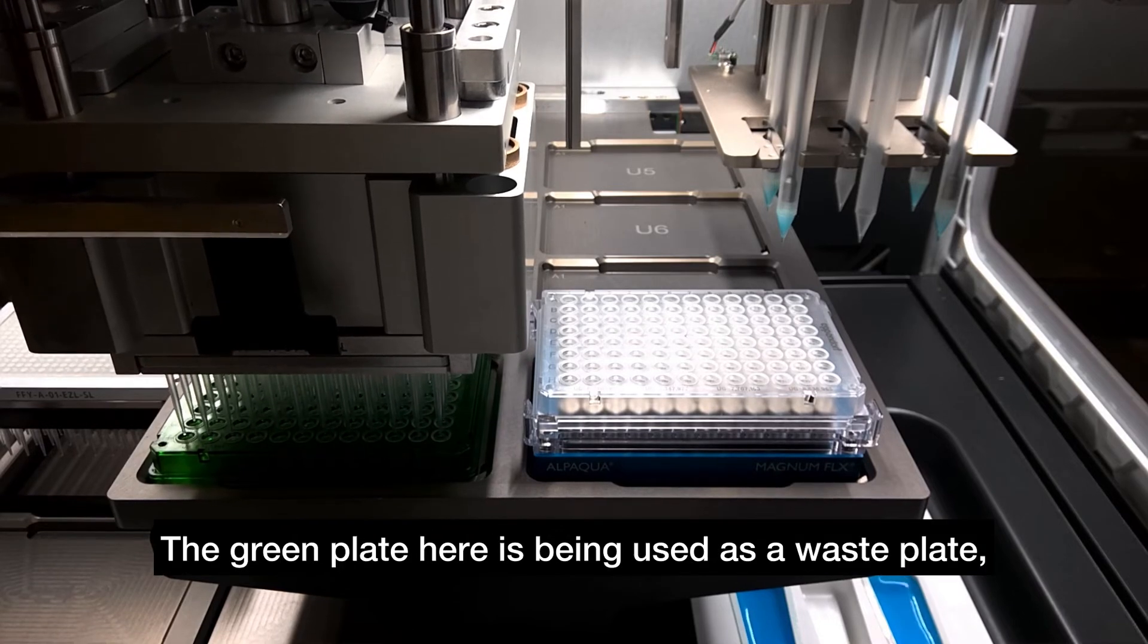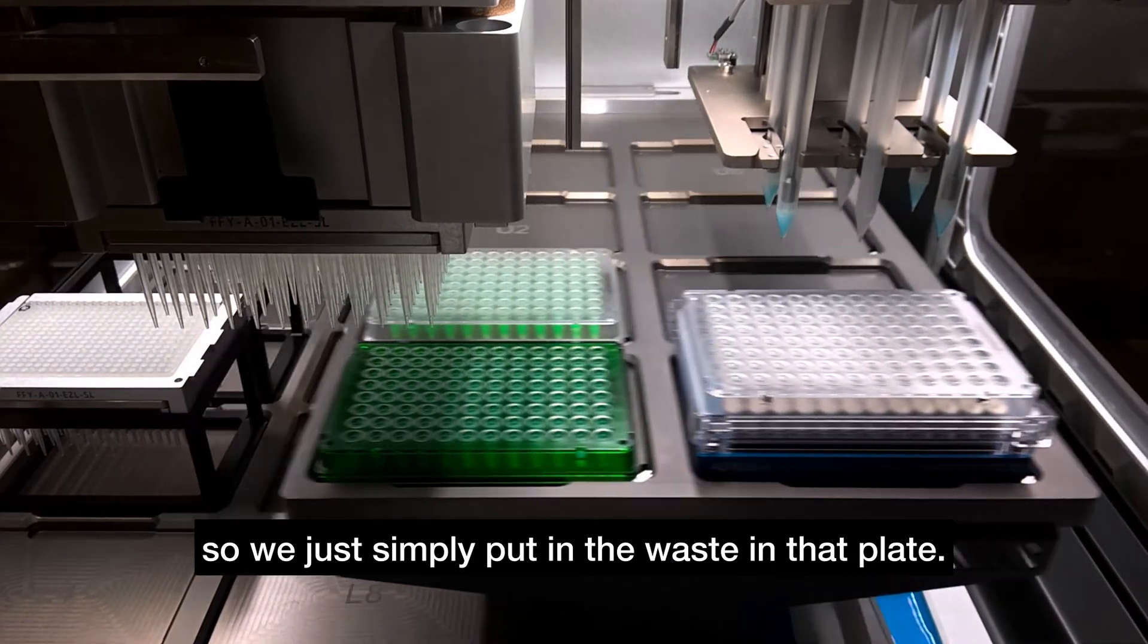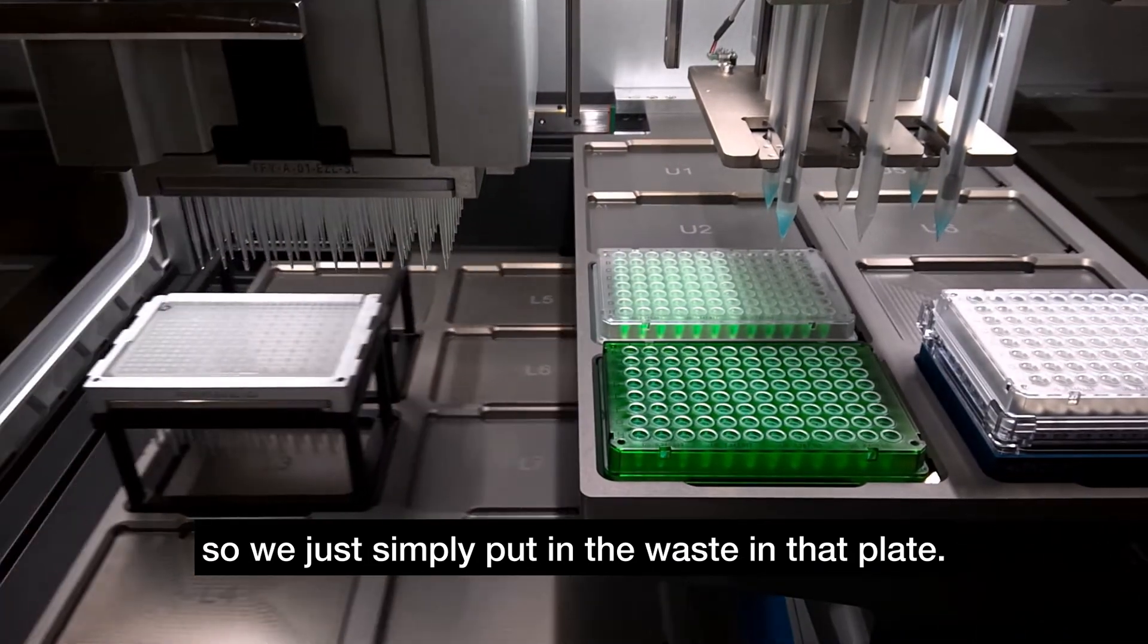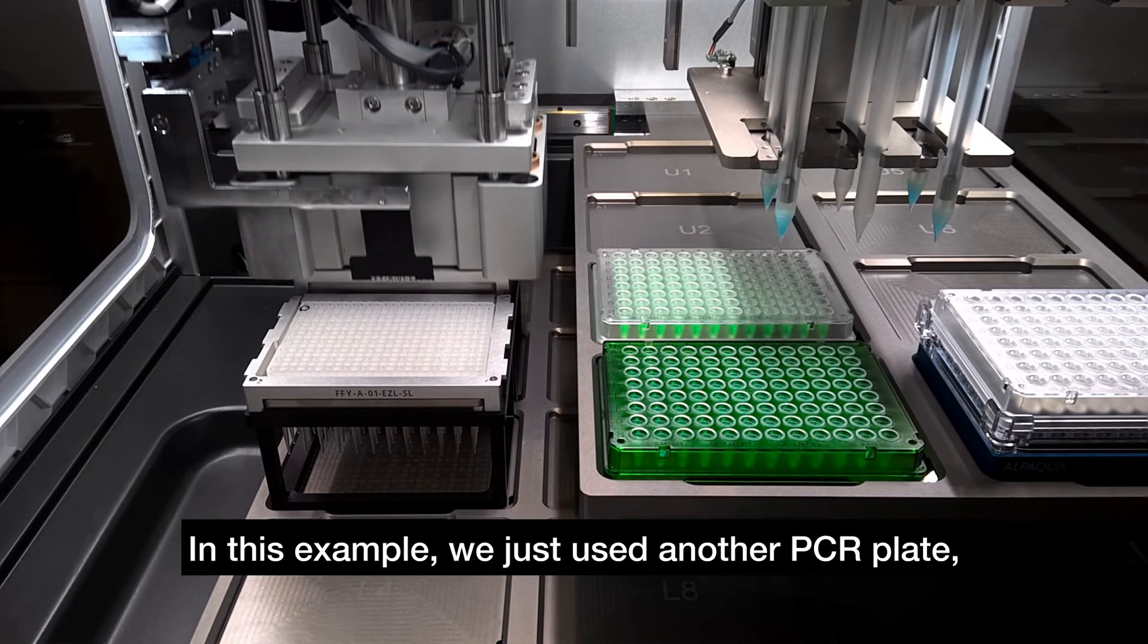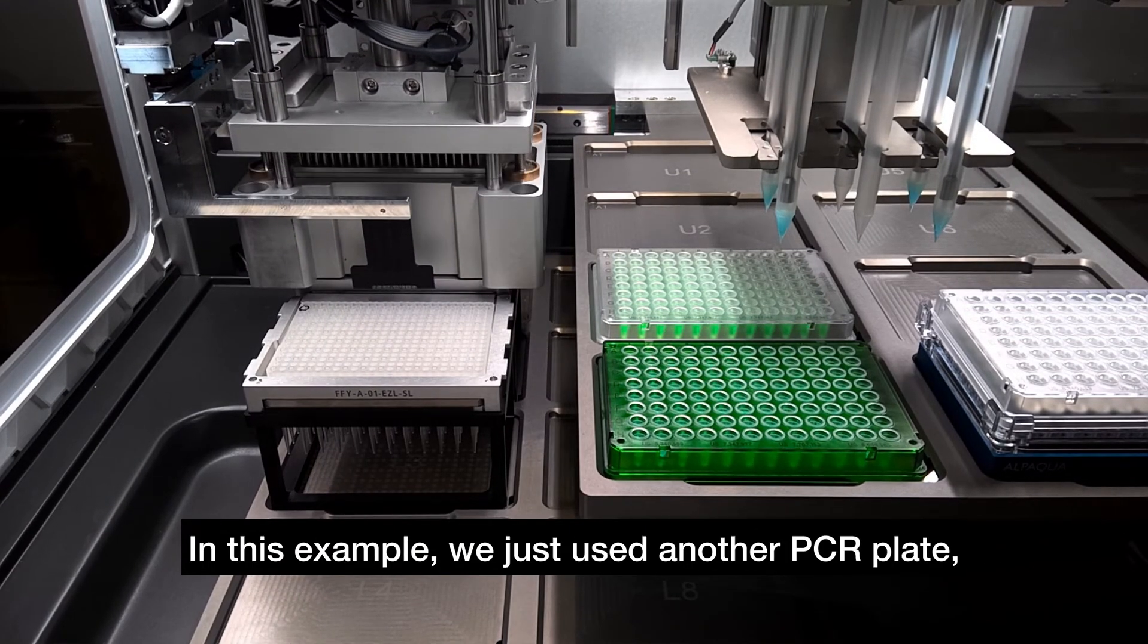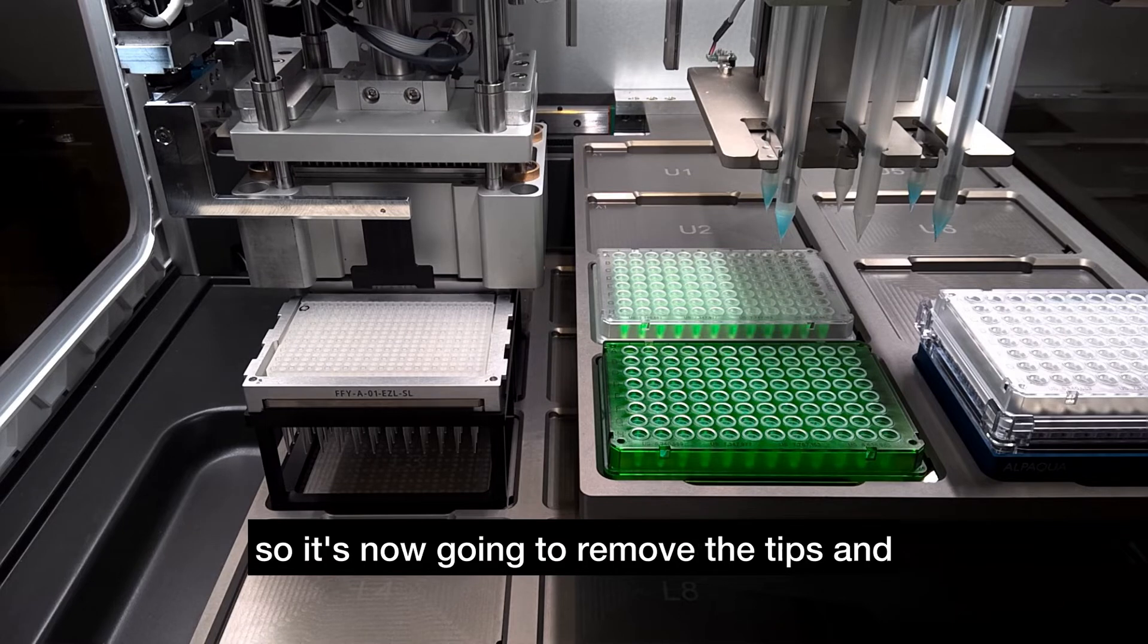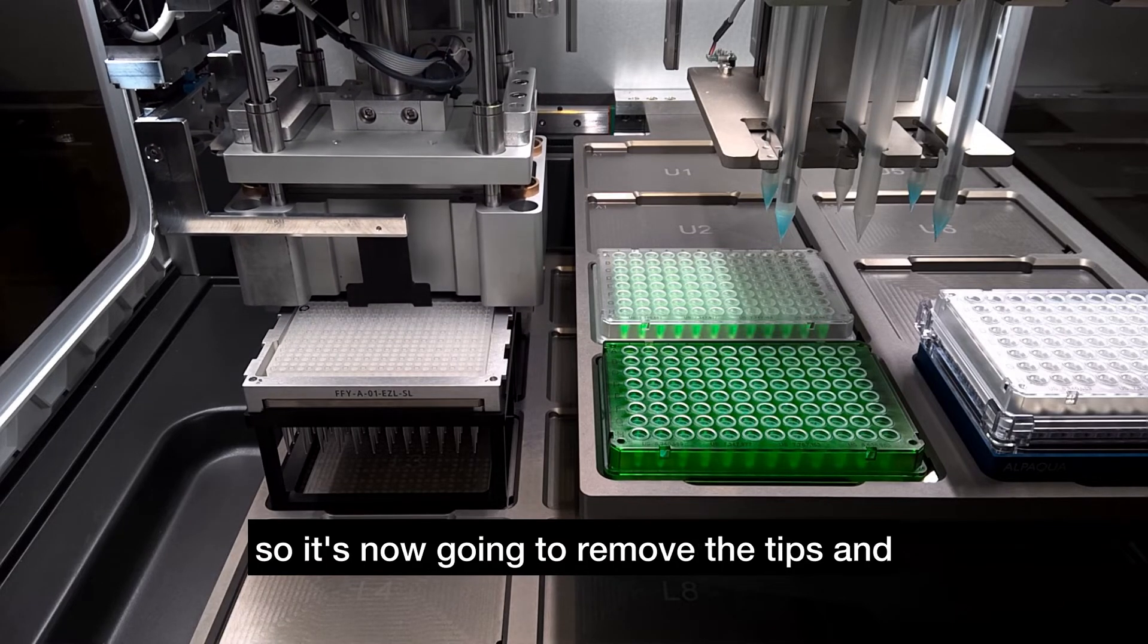The green plate here is being used as a waste plate, so just simply putting the waste in that plate. Obviously that could be a trough or a deep well plate. In this example, we've just used another PCR plate. So it's now going to remove the tips.